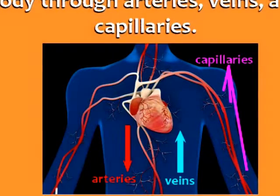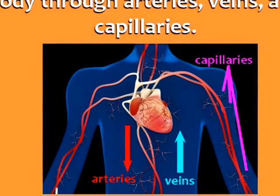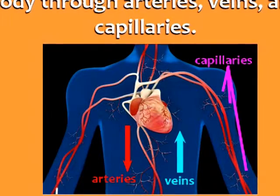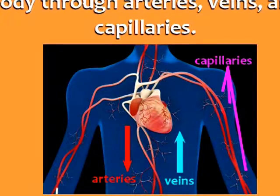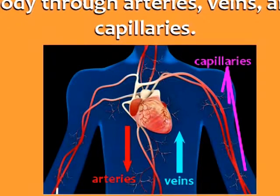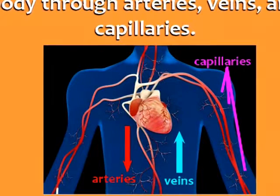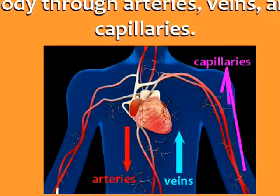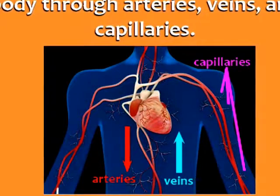Let's begin with the circulatory system. Your heart pumps blood to your entire body through arteries, which carry blood away from the heart, veins, which carry blood back to the heart, and capillaries, very tiny blood vessels.